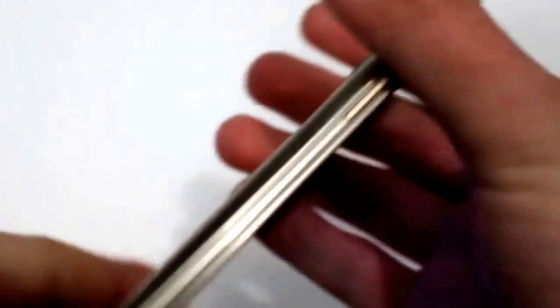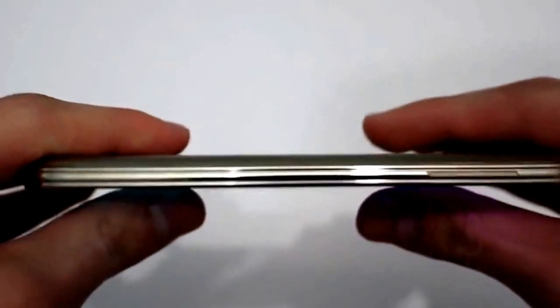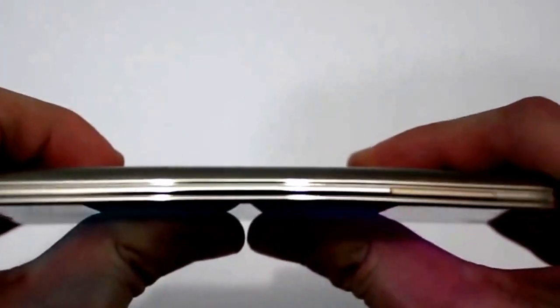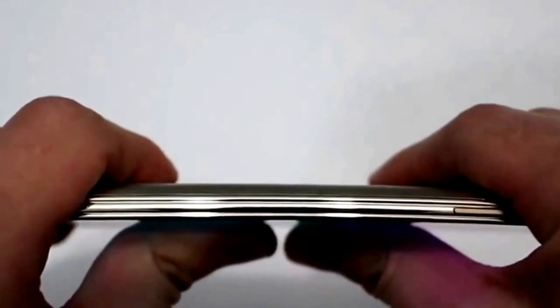As you can see the phone creaks and cracks a lot when I press it down but nothing happens to it. I am actually applying a lot of pressure, so much that my fingers are actually hurting. As you can see they are totally red from applying a lot of pressure.